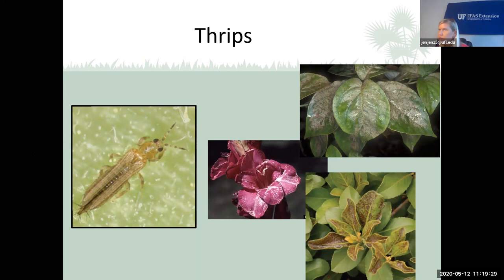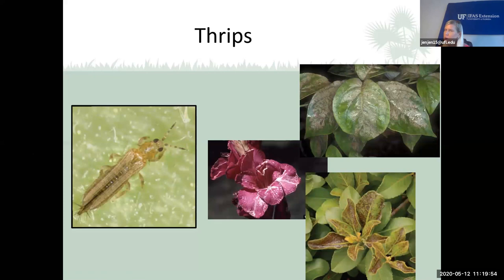Thrips come in different colors — black, brown, and translucent yellow, like the chili thrips. They can feed on leaves and flowers, and sometimes get into flower buds preventing them from opening. They have a rasping mouthpart that planes the leaf surface and laps up the juices, causing discoloration. To easily test for thrips, take a white sheet of paper, shake the plant over it, and look for thrips. Or cut open an unopened flower bud and shake it to see if any thrips come out.